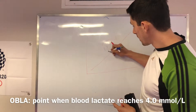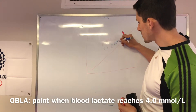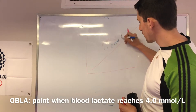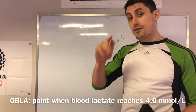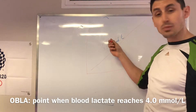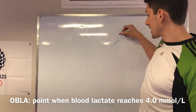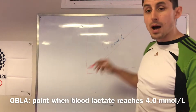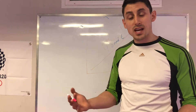OBLA — onset of blood lactate accumulation — usually happens at 4.0 millimoles, which is the unit of measurement for blood lactate. Once we get to 4.0 millimoles, that's the onset of blood lactate accumulation, and we can expect it to go up from there as we continue to exercise.